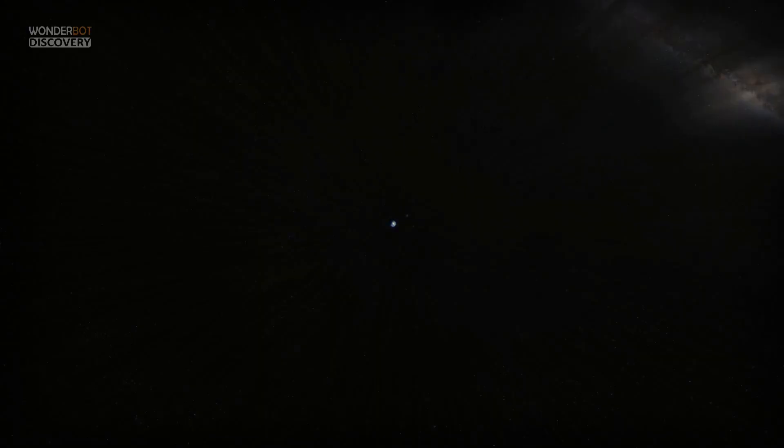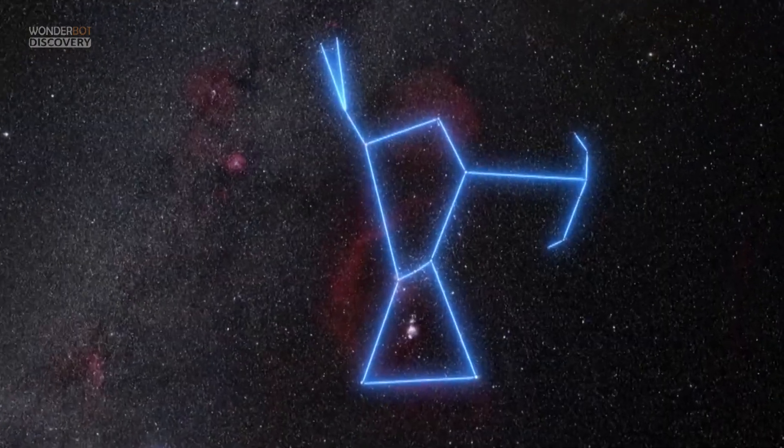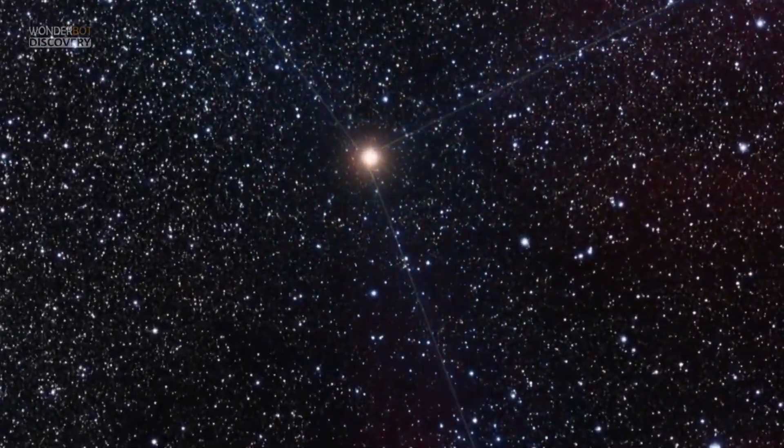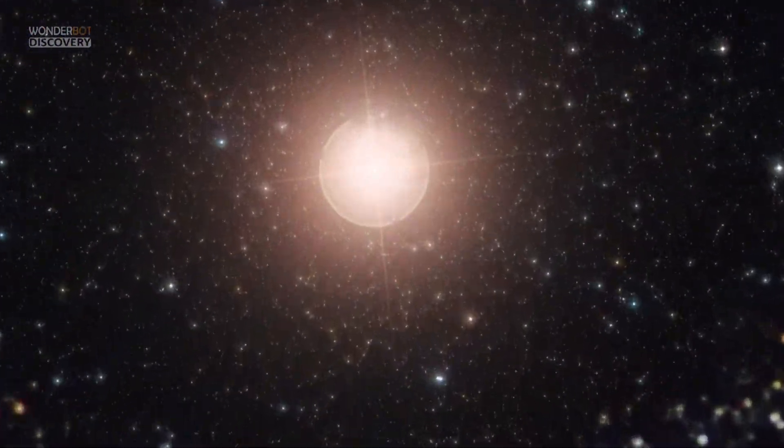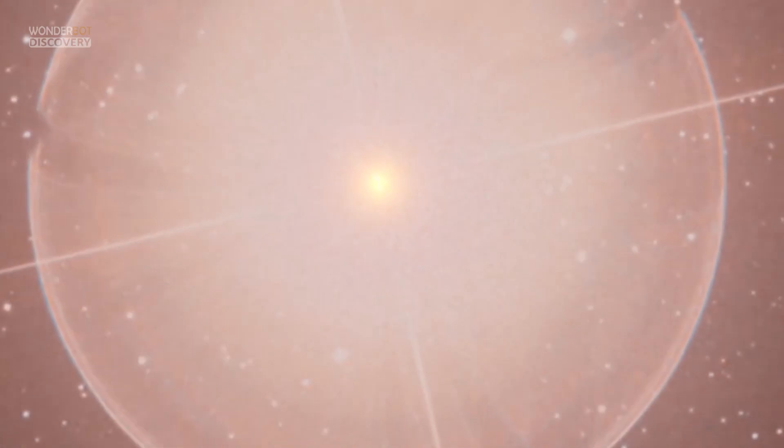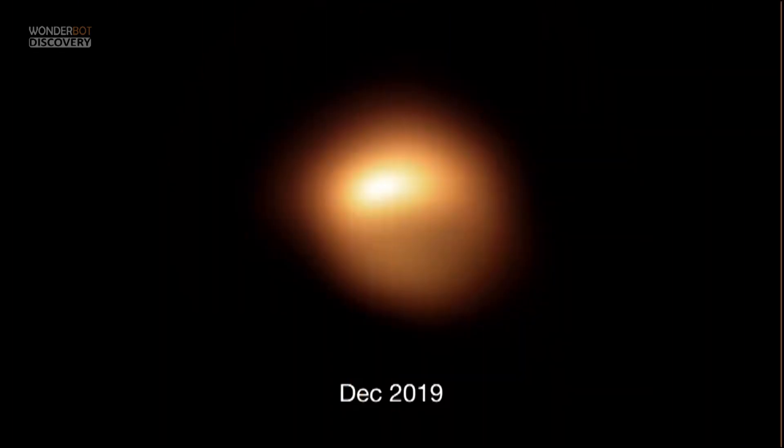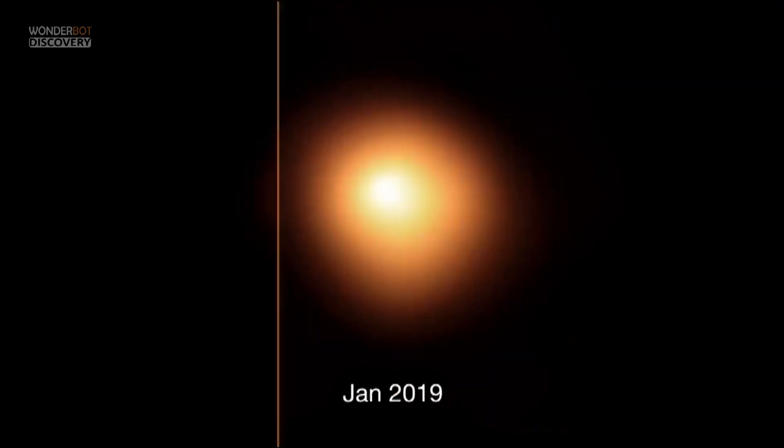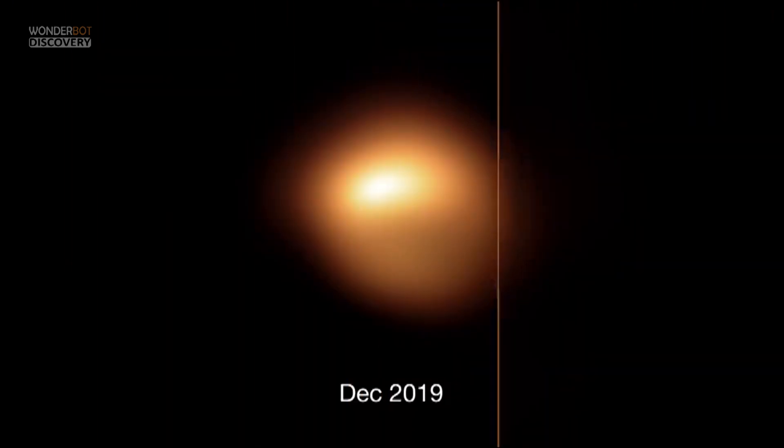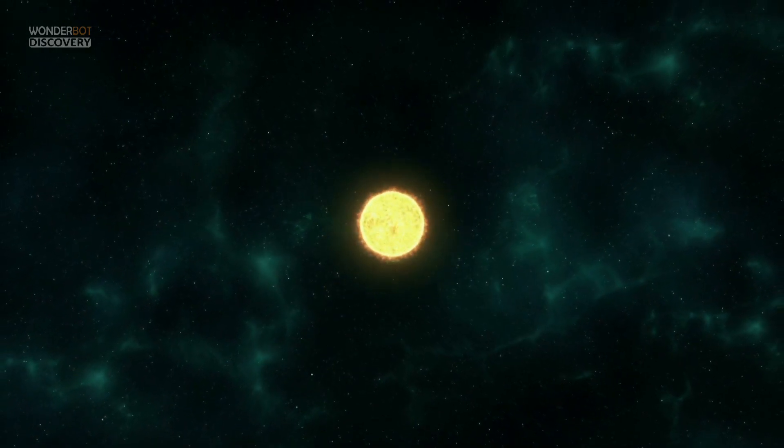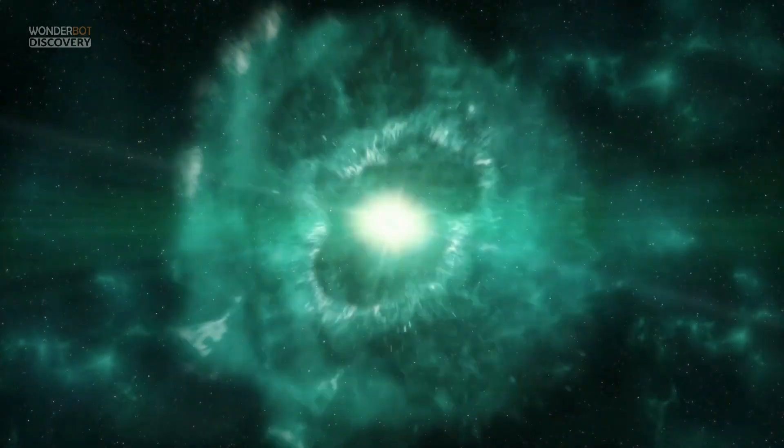The approximately 8.5 million year old star, which is part of the Orion constellation, has been one of the most recognizable stars in the sky because of its brightness and coloration. But this recent dramatic fading has prompted scientists to suggest that the star may be entering a pre-supernova phase, dimming before it collapses and dies in a fiery supernova explosion.